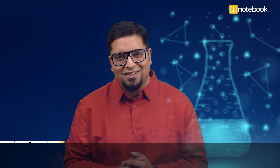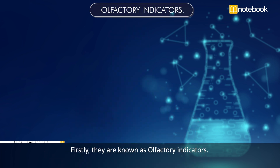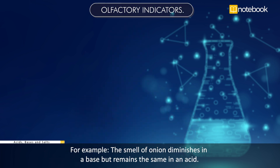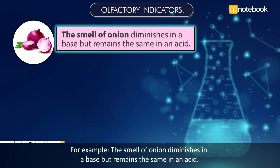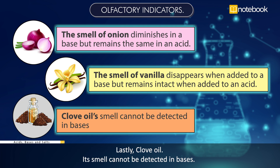Some indicators change their odor — these are known as olfactory indicators. For example, the smell of onion diminishes in a base but remains the same in an acid. The smell of vanilla disappears when added to a base but remains intact in an acid. Clove oil's smell cannot be detected in bases.